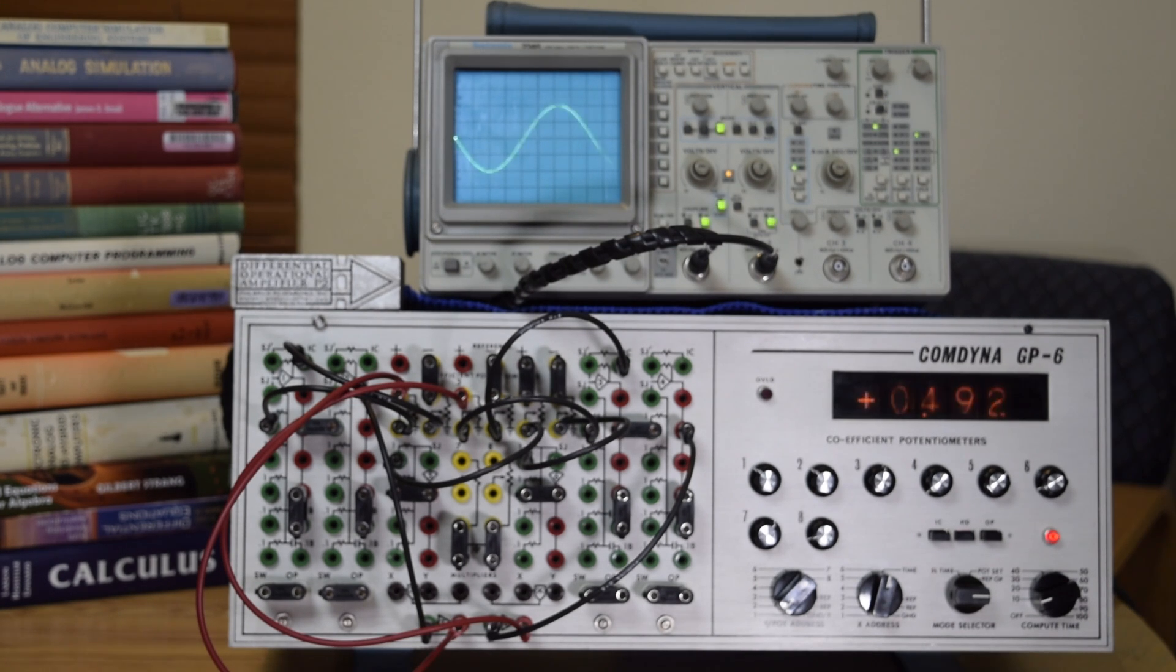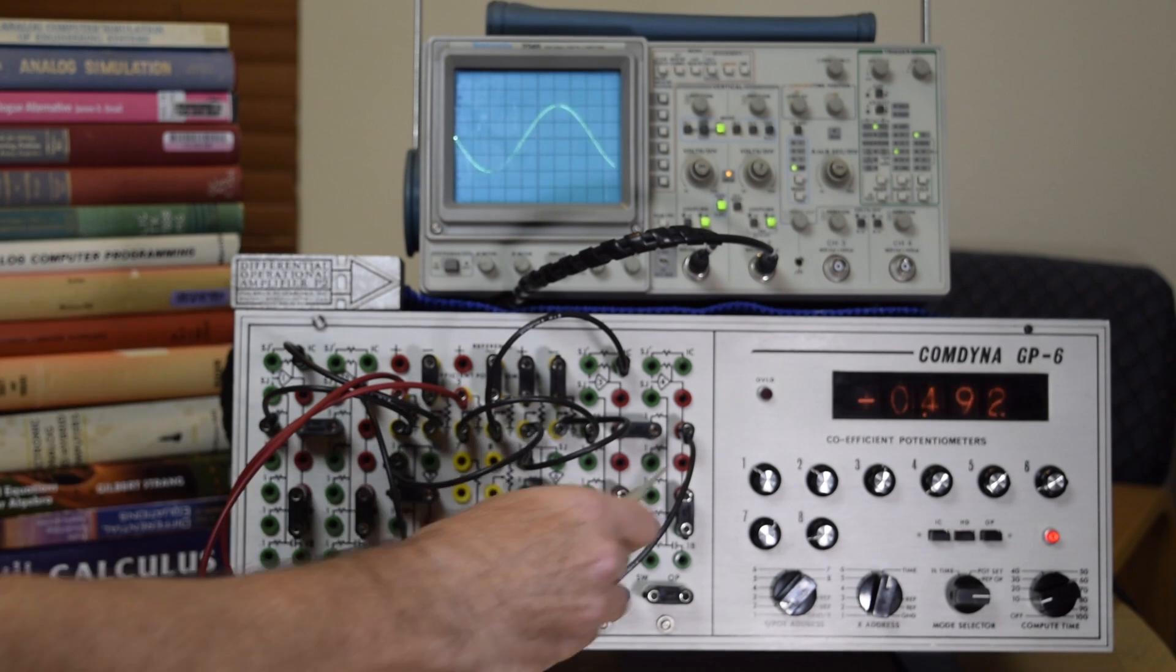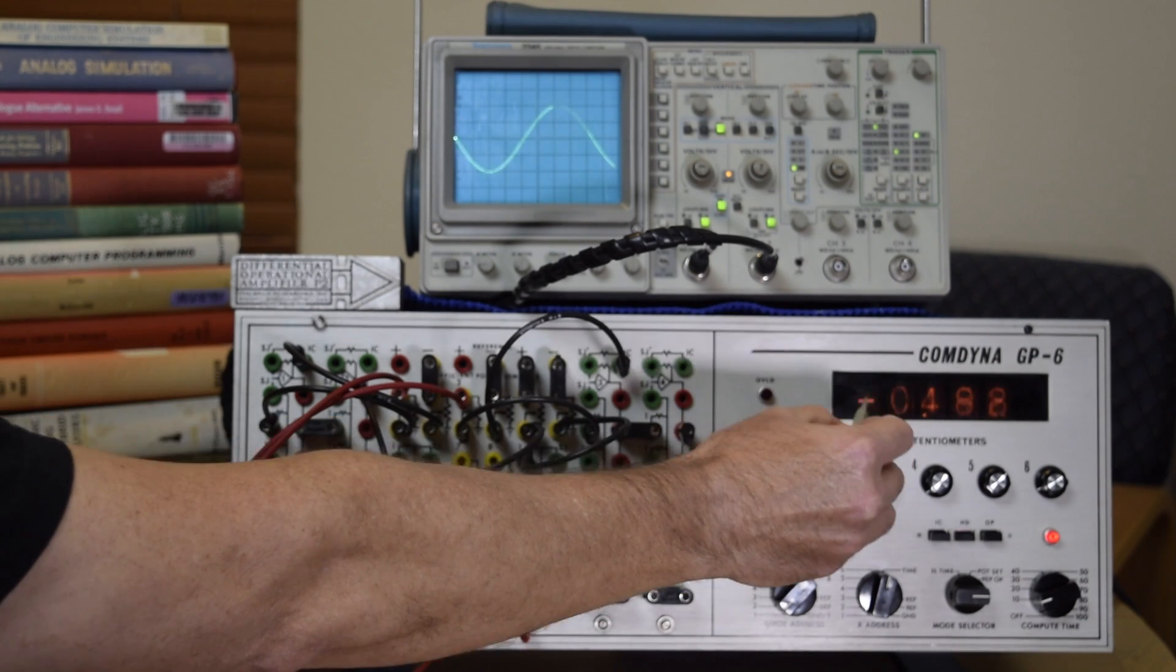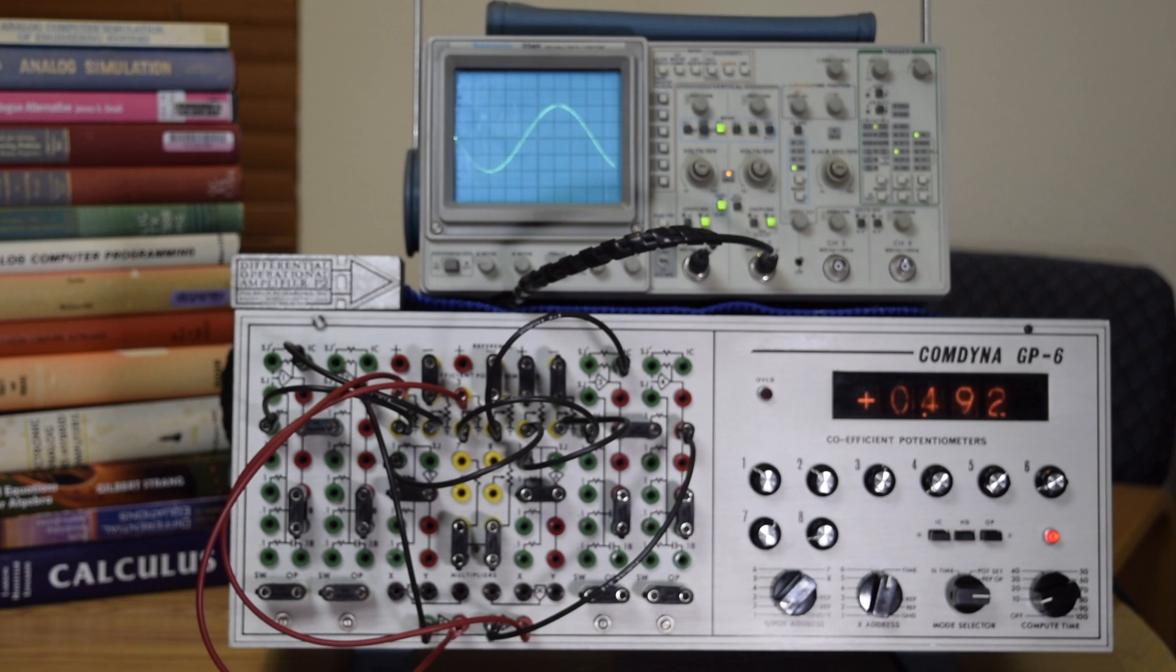And then of course the Nixie tube display. It doesn't show up very well on the video there, but that's a fairly nice kind of interesting feature of the unit back in the 70s. This was fairly common to use the tube-based Nixie tube displays. I may try to get a close-up of that later.